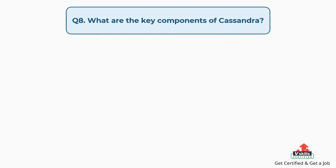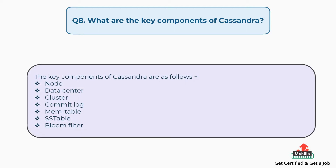Question number eight: What are the key components of Cassandra? The key components of Cassandra are as follows: Node, Data center, Cluster, Commit log, Mem table, SS table, and Bloom filter.